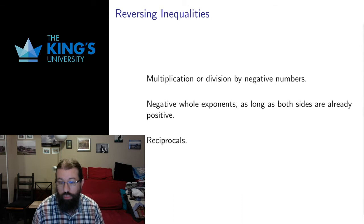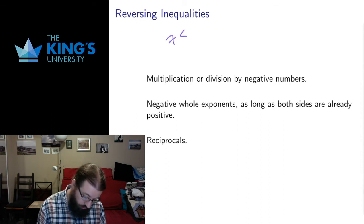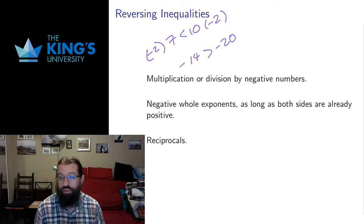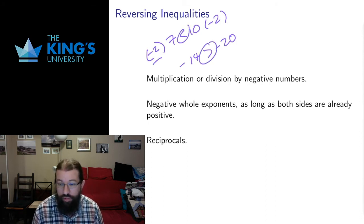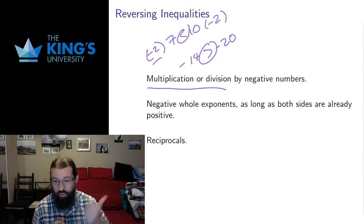So certain operations, we can just switch the inequality. If I multiply or divide by negative numbers, then I switch the equality. So again, if I have 7 less than 10, and I multiply by negative 2 on both sides, I get negative 14, which is greater than negative 20, which is true. Negative 14 is ahead of negative 20 on the number line. So I have multiplied by a negative number and taken the inequality and switched it around from a less than to a greater than. So multiplication or division by negative numbers reverses inequality.